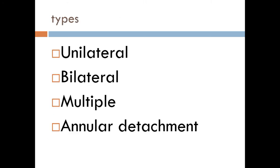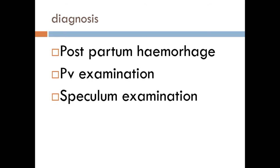Types of cervical tear can be unilateral at one side of the cervix, bilateral, multiple tear involving the anterior and posterior lip of the cervix, and rarely annular detachment of the portio vaginalis of the cervix. Diagnosis of cervical tear: shortly after delivery, the patient will suffer from postpartum hemorrhage, and by per vaginum examination we can detect the site of the tear. By speculum examination, we can bring the cervix with two ring forceps on the anterior and posterior lip and inspect the angles of the cervix for any tear.